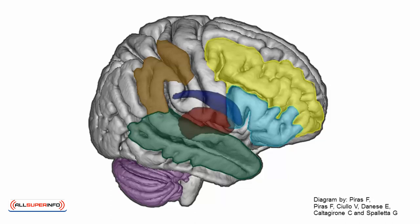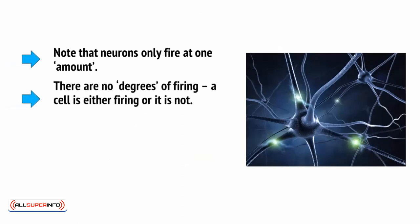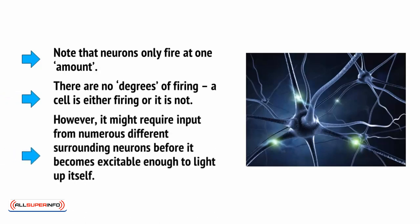And the connections mean that seeing one thing will often result in you remembering something else, or making the decision to do something. Note that neurons only fire at one amount. There's no degrees of firing. The cell is either firing or it's not. However, it might require input from numerous different surrounding neurons before it becomes excitable enough to light up itself.